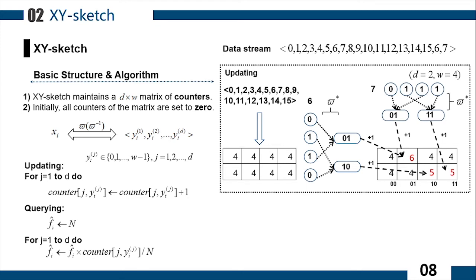Similarly, when data item 7 arrives, it is decomposed into 1 and 3 by the same bijective function. Then, we find the corresponding counters and update them.